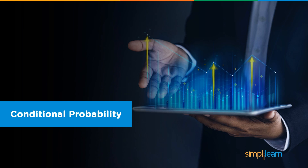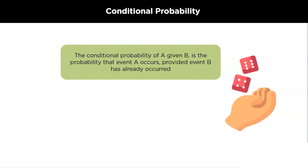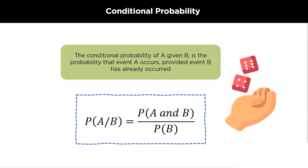Now that we know all the basic concepts in probability theory, we will move on to conditional probability. Let A and B be two events associated with a random experiment. Then, the probability of A's occurrence under the condition that B has already occurred is called the conditional probability. It is denoted by P(A|B). Thus, P(A|B) = P(A ∩ B) / P(B). P(A|B) is read as the probability of occurrence of A given that B has already occurred. Similarly, P(B|A) is the probability of occurrence of B given that A has already occurred.